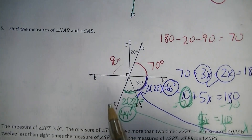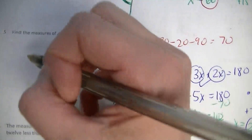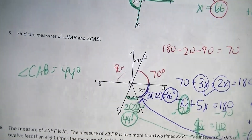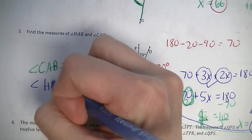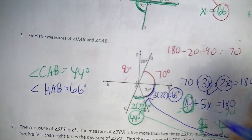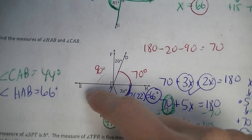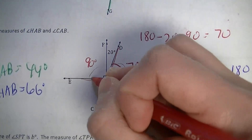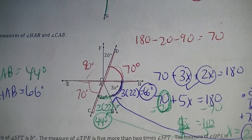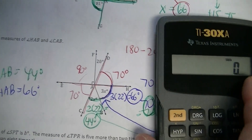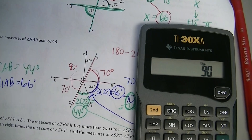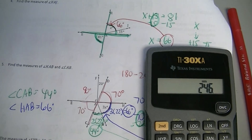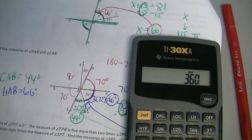Let's label everything clearly. The measurement of angle CAB is 44 degrees. And the measurement of angle HAB is 66 degrees. Just to double check — these are angles at a point, so they should have a sum of 360 degrees. 90 plus 20 plus 70 plus 66 plus 44 plus 70 is 360. Confirmed.